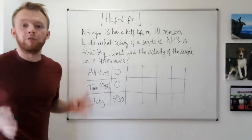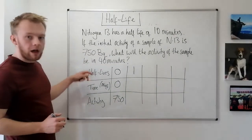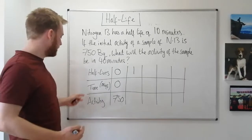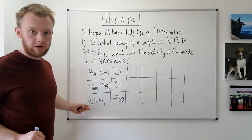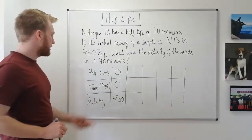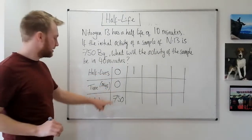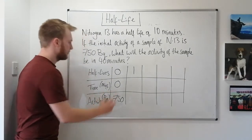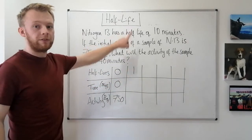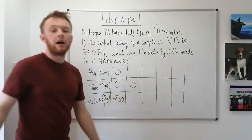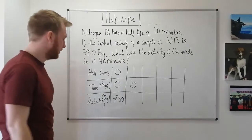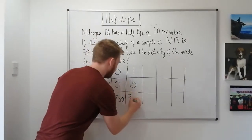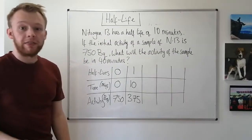Here's the table with columns for number of half-lives, time elapsed, and activity. From the question, after zero half-lives and zero minutes, the activity is 750 Becquerels. After one half-life — which is 10 minutes — the activity halves, so 750 ÷ 2 = 375 Becquerels.